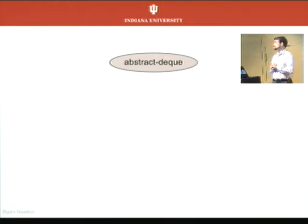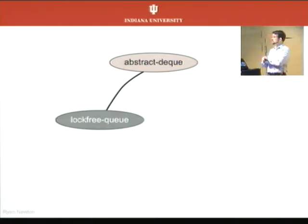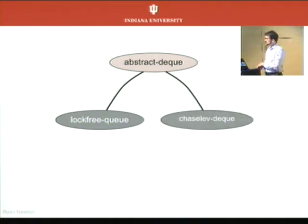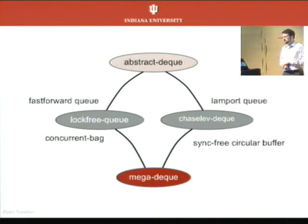The motivation for this setup is to release a single package with this interface for queues, which I currently call abstract-deque — though it's been argued we should use existing Haskell terminology like deque-classes. I'd encourage keeping type classes in their own package so that package always installs without problems. Then depending on that, we have specific implementations. Today I'm really talking about a simple lock-free queue — the classic Michael-Scott queue, which is in the Java standard library — and also an implementation of Chase-Lev work-stealing deques, which are used inside the GHC runtime system. All of this gets bundled up in a single mega-deque package, so if you just depend on the mega-deque, we can fill in more implementations in the future.